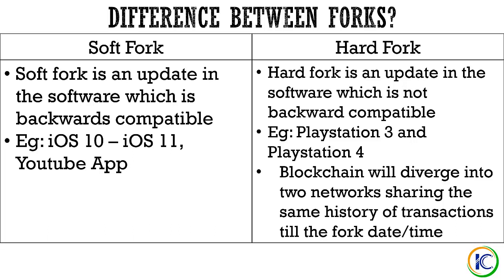Now let's see what a hard fork is. A hard fork is basically an update to the software or blockchain which is not backward compatible. The best example for this is PlayStation 3 and PlayStation 4. The game discs that come with PlayStation 3 — you can't play those same discs on PlayStation 4. So once you've upgraded to PlayStation 4, there's no looking back. You can only play games created or optimized for PlayStation 4. That's basically an example of a hard fork.